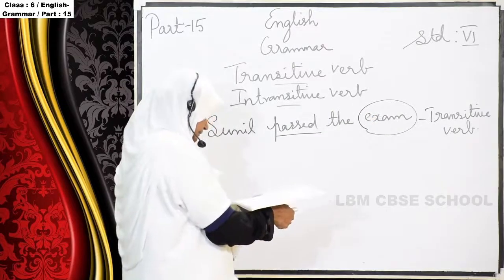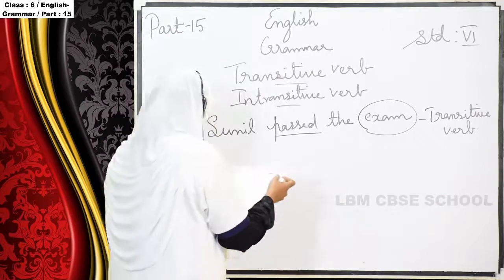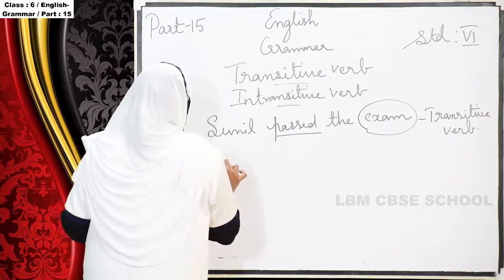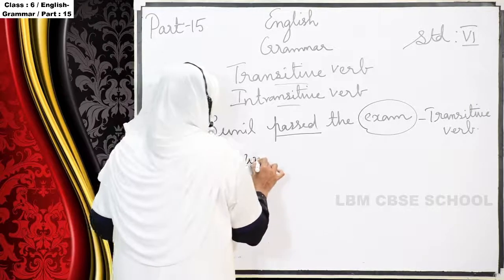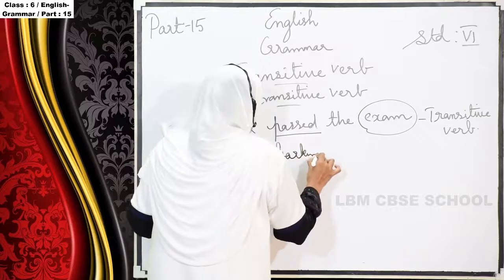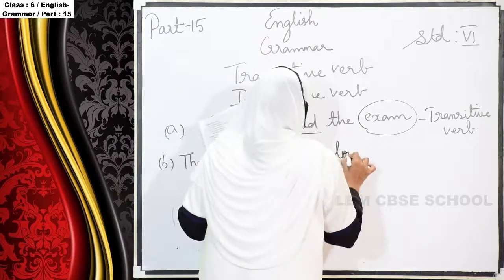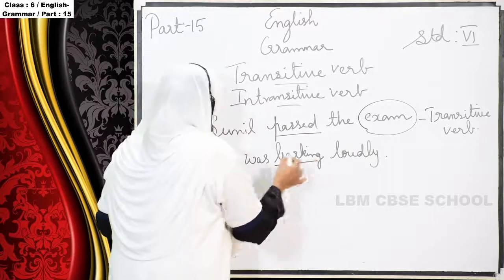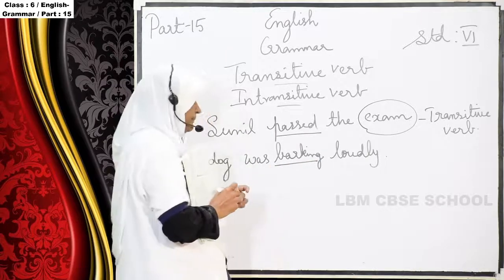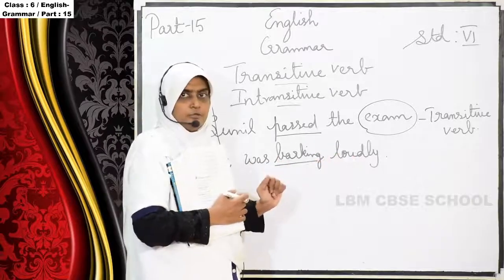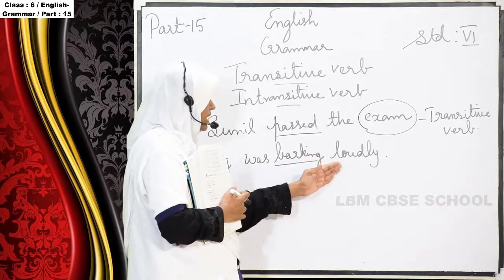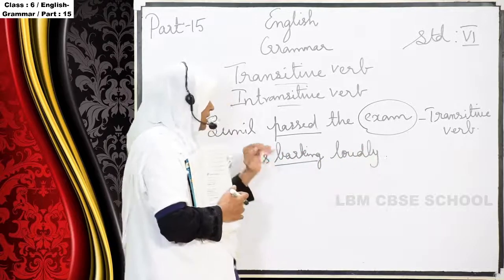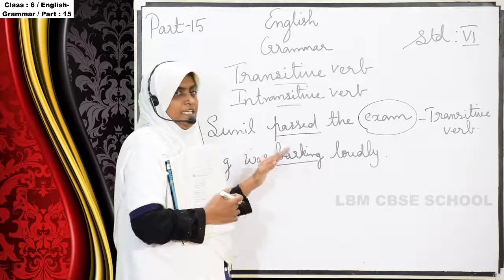Next one — B. 'The dog was barking loudly.' Here 'barking' is the verb. Can this verb take an object? No. 'Loudly' only tells how it barks. It is not passing any object here. So we call this sentence an intransitive verb.